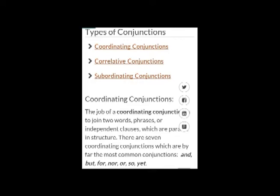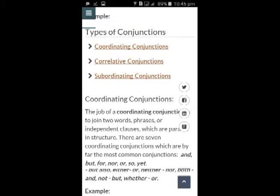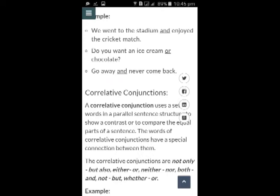There are three types of conjunctions: number 1, coordinating conjunctions; number 2, correlative conjunctions; number 3, subordinating conjunctions. The job of a coordinating conjunction is to join two words, phrases, or independent clauses which are parallel in structure. There are seven coordinating conjunctions, which are by far the most common: and, but, for, nor, or, so, and yet.